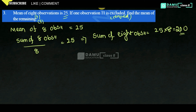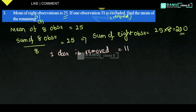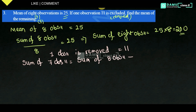One observation is removed; that observation value equals 11. So sum of 7 observations equals sum of 8 observations minus the removed observation, which is 11. That is 200 minus 11, which gives 189.